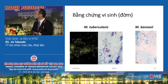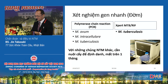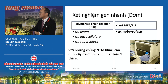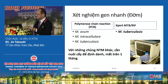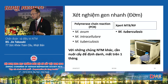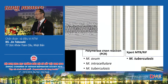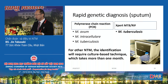The next step is rapid genetic diagnosis. We now have GeneXpert for TB diagnosis and some PCR methods. Within one day, we can get results for MAC or intracellulare. However, for most other NTM, identification requires culture-based techniques which take more than one month.